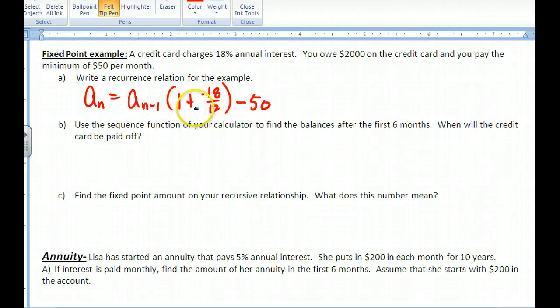So whatever I owe, they're going to charge me 18%, and that's what I'm going to owe off here. And so they're adding more and more and more to my account, which I don't like. So I'm going to pay off, and so from the bank's perspective, I'm going to subtract off my balance, I'm going to subtract off $50 every month. This is a recurrence relation.